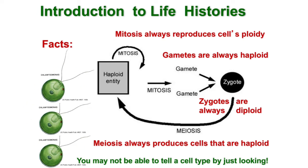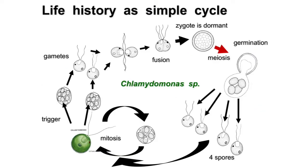This haploid form is going to be the dominant form of life of this alga. Here is one more slide which in more detail demonstrates what I already have said. So we have a haploid organism which may reproduce by creating more clones of itself — we call this mitosis. This stage is not multicellular. When the cell wall breaks, we would see more haploid organisms identical to the mother organism.